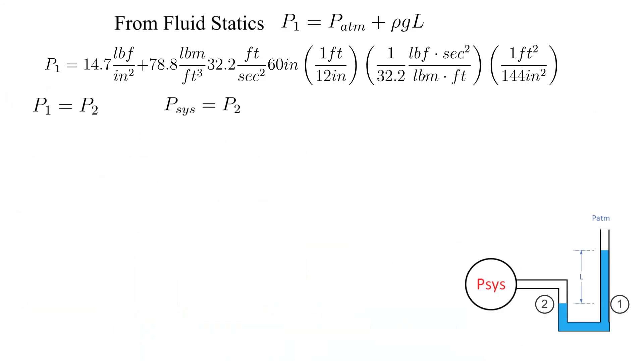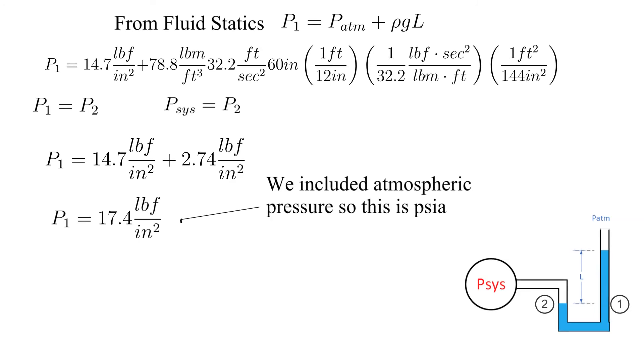Crunching the numbers we get that P1 is equal to 14.7 plus 2.74 pounds force per inch squared, or 17.4 pounds force per inch squared. In this calculation, we included atmospheric pressure, so this is an absolute pressure with units of PSIA.